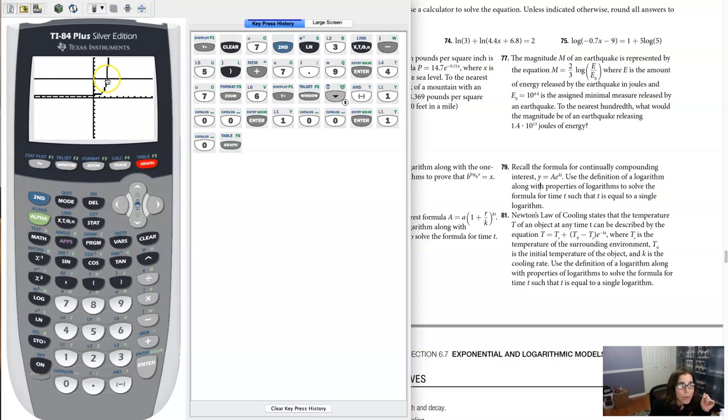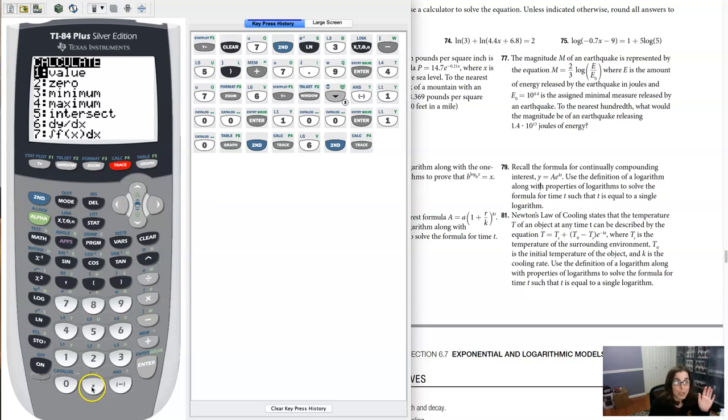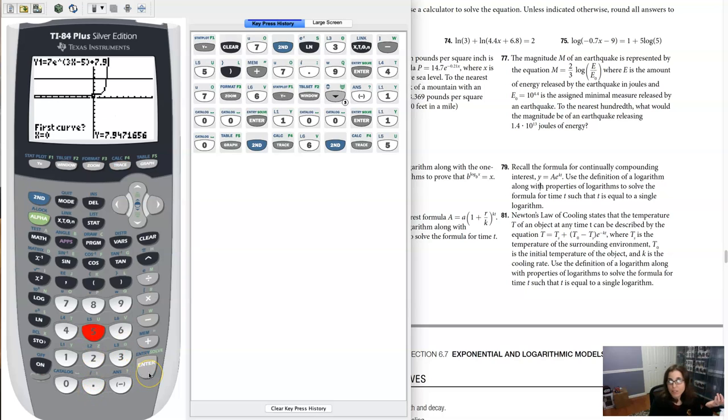Okay so if I look at my intersection point my intersection point to me looks pretty close to an x value of like two and a half somewhere between two and three. So let's hit second trace we'll go option five oops I hit six excuse me let's do this again second trace option five and then I'm gonna hit enter enter enter because I do want my first curve to be that exponential curve. I do want my second curve to be the line y equals 47.